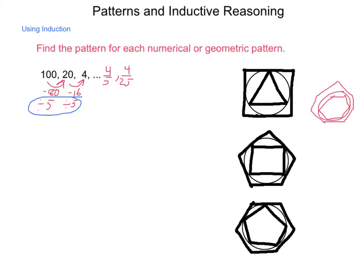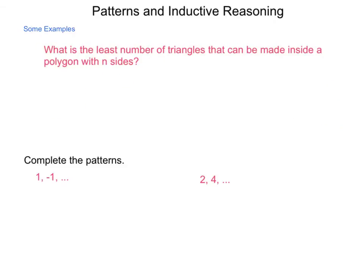Now, with this, we also need to look at a few other items with our patterns in inductive reasoning. For example, what is the least number of triangles that can be made inside of a polygon with n sides?